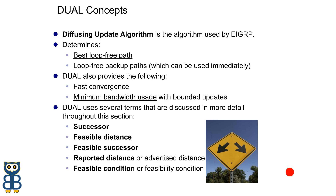DUAL works when the existing network topology changes or any existing device goes down. The topology table, neighbor table, and routing table are referred to by the Diffusing Update Algorithm immediately to select the best path for EIGRP to send data to its destination. The path selection is done with one thing taken to avoid, and that is loop-free routes. In other words, the DUAL algorithm immediately comes into action when no feasible routes are available, and it starts computing the best alternative route.